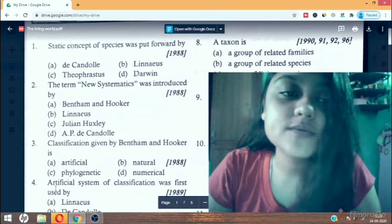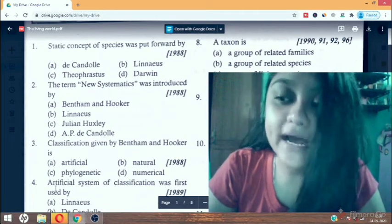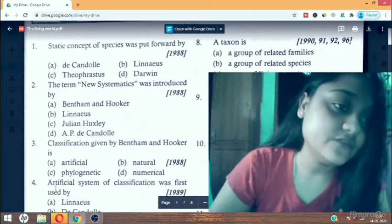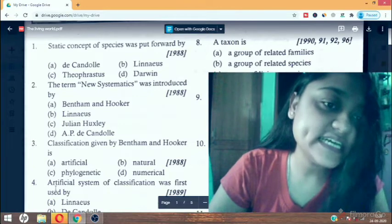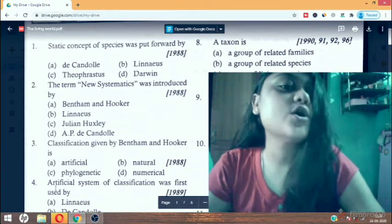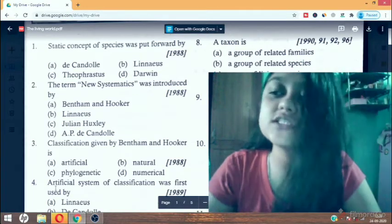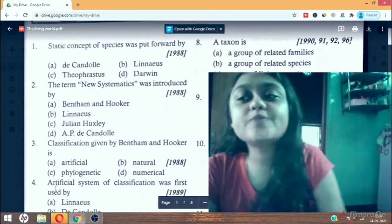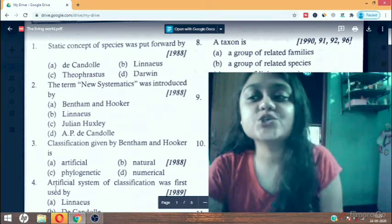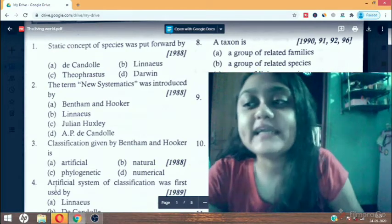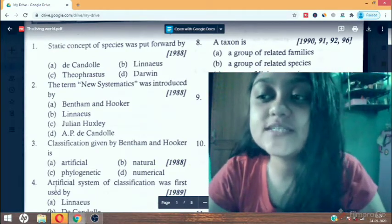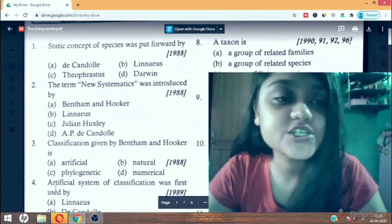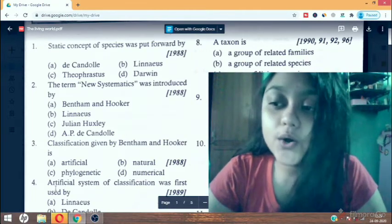First question: static concept of species was put forward by - first option is Decandol, Linnaeus, Theoprastus, or Darwin. So the answer will be Linnaeus. Carolus Linnaeus introduced binomial system of nomenclature in his book Species Plantarum. He said that there can be variation within species, but they do not change from one species to another.